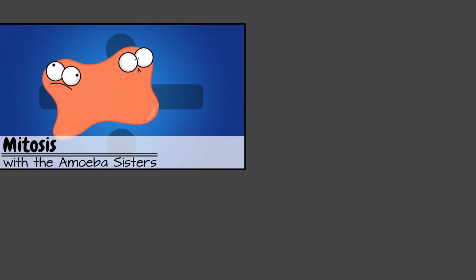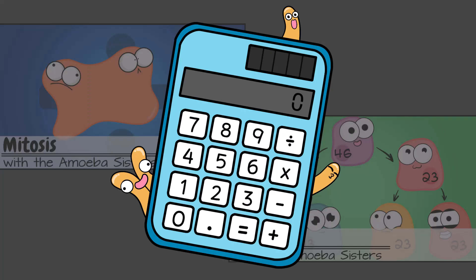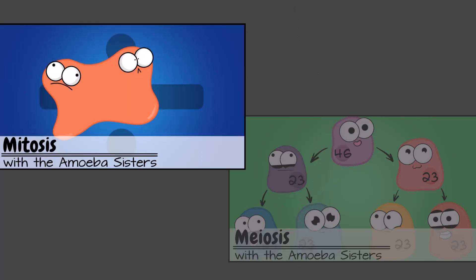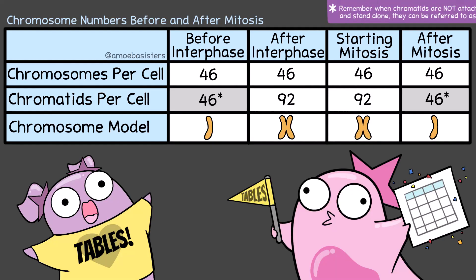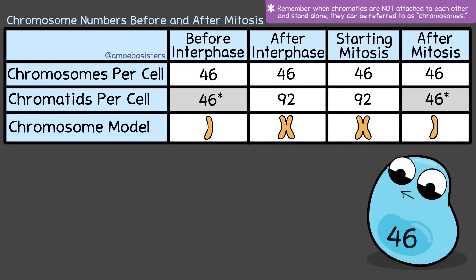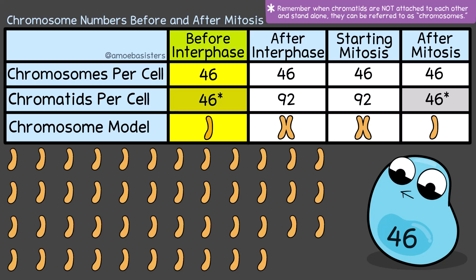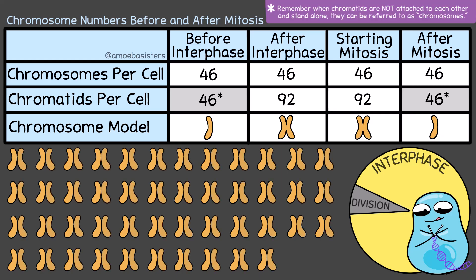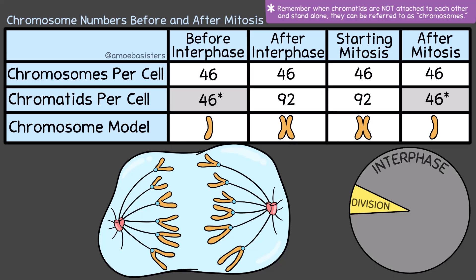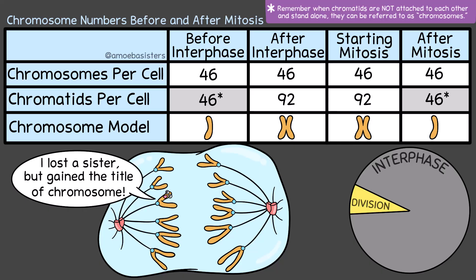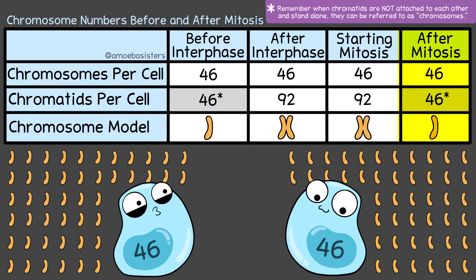We have videos on mitosis and meiosis, but you are probably curious about how the number of chromosomes changes in mitosis and meiosis. Let's start with mitosis and bring out our fabulous table. In most cases, humans have 46 chromosomes in most of their body cells. Before mitosis begins, the body cell goes through interphase, where it duplicates its chromosomes. After interphase, you still have 46 chromosomes, but each chromosome has two sister chromatids — identical copies. You start mitosis like that. During mitosis, the chromatids separate. As soon as the sister chromatids are separated, those chromatids can now be called chromosomes. After mitosis, you end with two daughter cells that each have 46 chromosomes that look just like what you started with before interphase began.